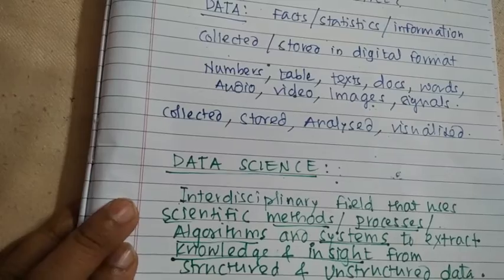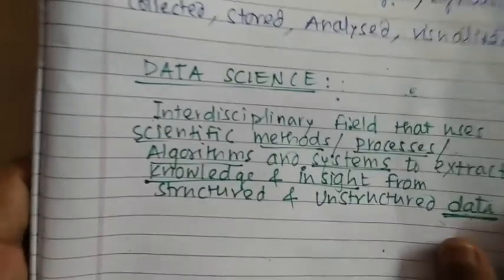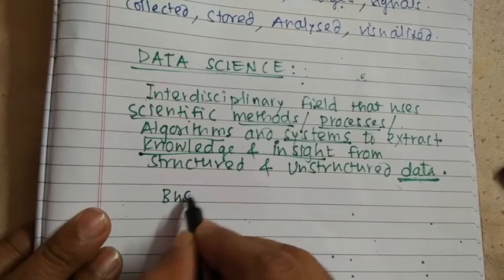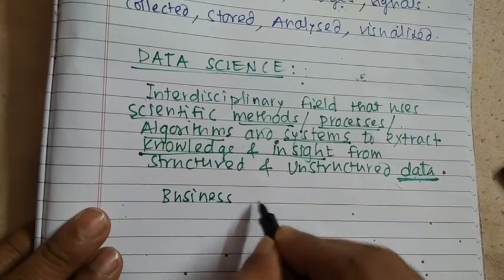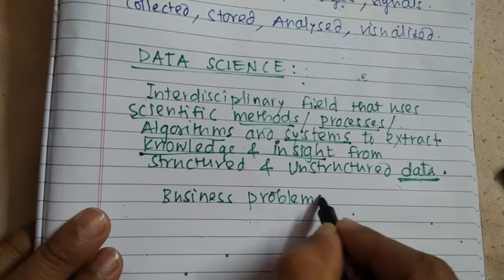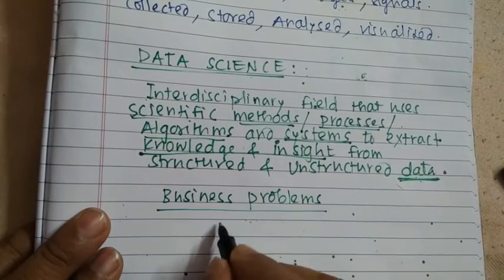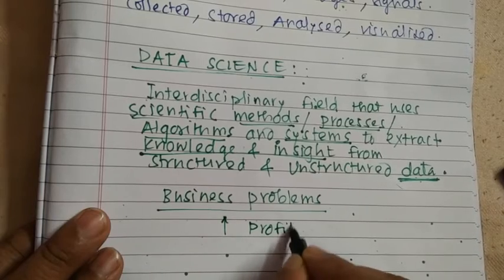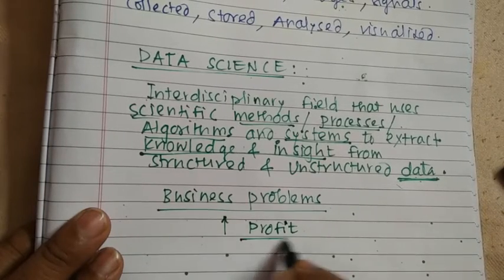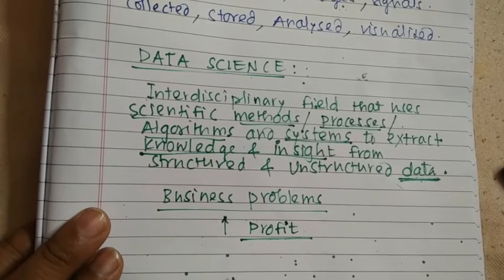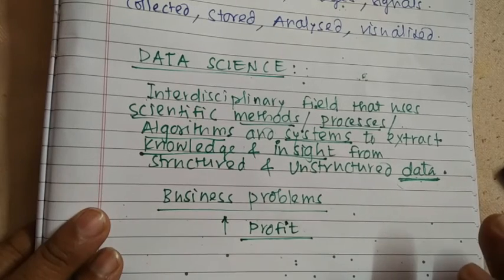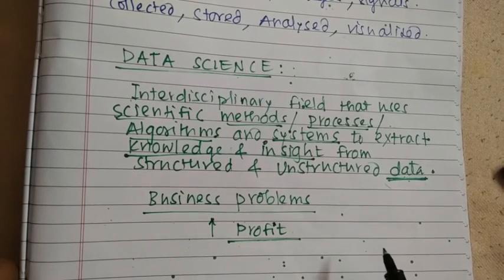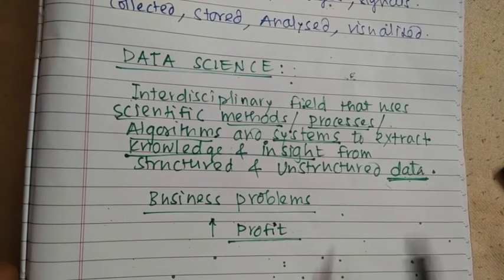And why this knowledge and information is required? To solve the business problems. To solve the business problem, and why to solve the business problem? To earn more profit. So this is the complete definition of data science. Thank you, thanks a lot.